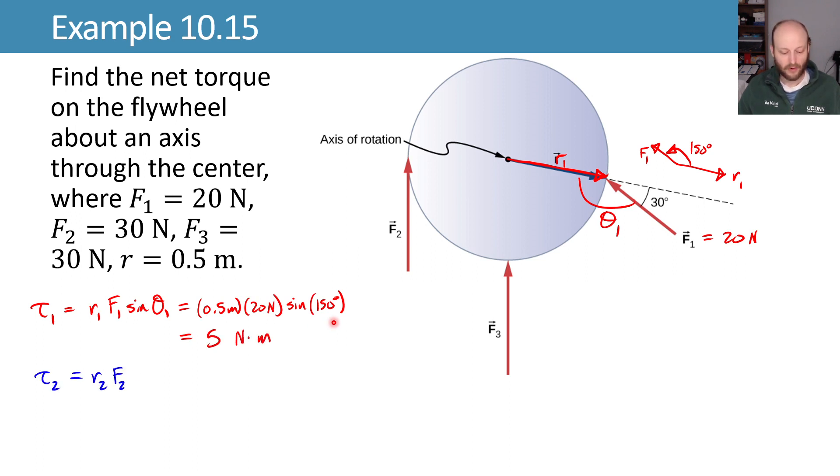Now for force 2. Torque 2 is equal to r₂F₂ sin θ₂. r₂ starts from the axis of rotation and goes towards the point of application of the force. F₂ we know from the problem statement of 30 newtons. And then θ₂ here, we could use 90 degrees.